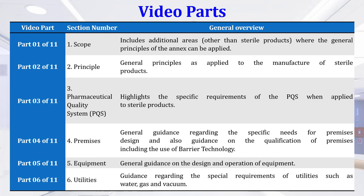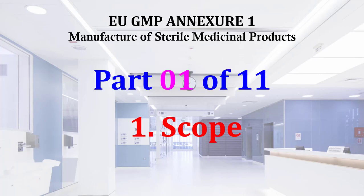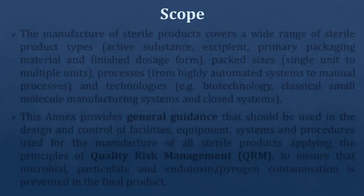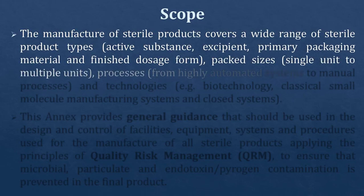We will cover what the scope of this guideline EU GMP Annex 1 is, and in our upcoming videos we will discuss the remaining parts. EU GMP Annex 1 - Manufacture of Sterile Medicinal Products - Part 1 of 11 is Scope. So what is the scope of EU GMP Annex 1?